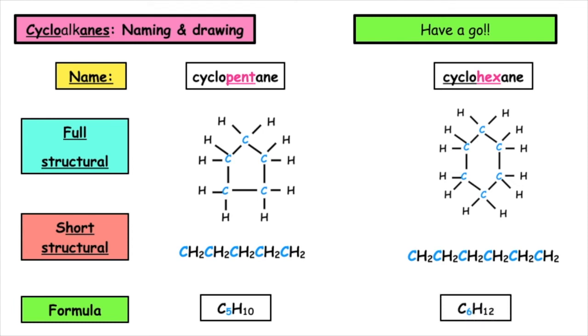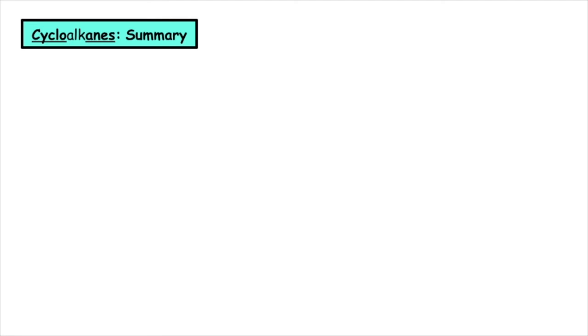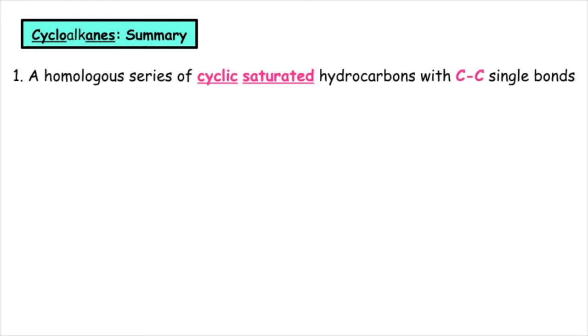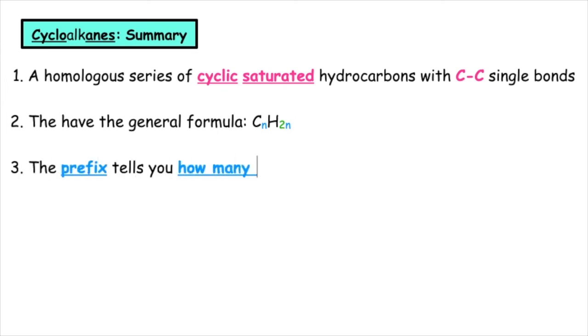To summarize everything that you need to know about the cycloalkanes, the cycloalkanes are a homologous series of cyclic saturated hydrocarbons with carbon to carbon single bonds. They have the general formula CnH2n. The prefix always tells you how many carbons are in the cyclic ring and remember cyclo means circle.